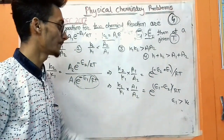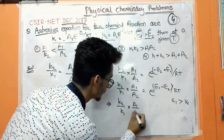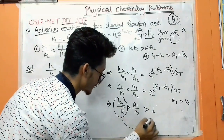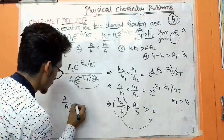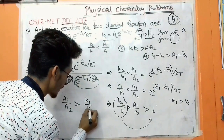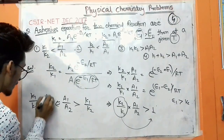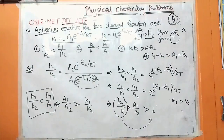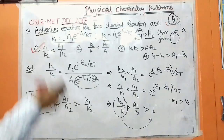So (k₂/k₁) × (A₁/A₂) = e^[(E₁ − E₂)/RT]. Since E₁ > E₂, the exponent is positive and greater than 1. Therefore (k₂/k₁)(A₁/A₂) > 1, which means k₁/k₂ < A₁/A₂. This is the right answer: k₁/k₂ is less than A₁/A₂. A four-mark problem but very simple.